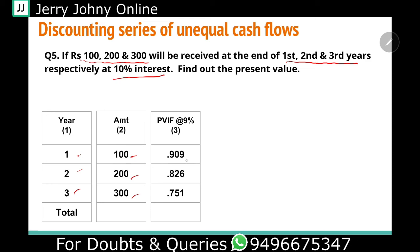We look at the discount factor of 0.909 for 1 year at 10 percent, 0.826 for 2 years, and 0.751 for 3 years.